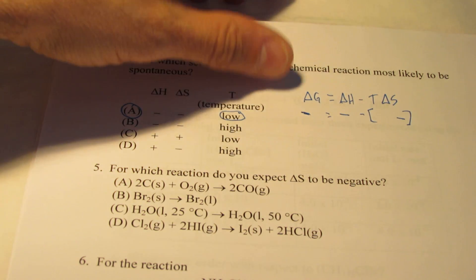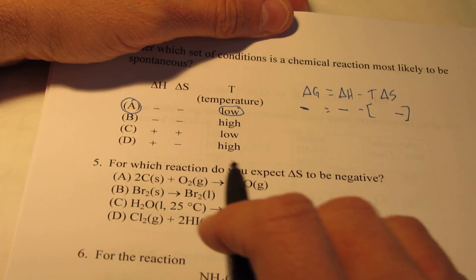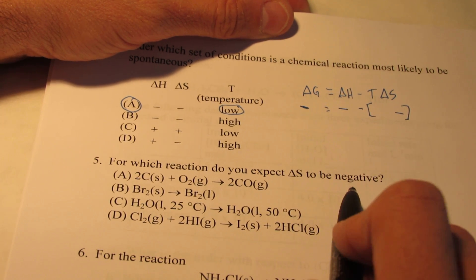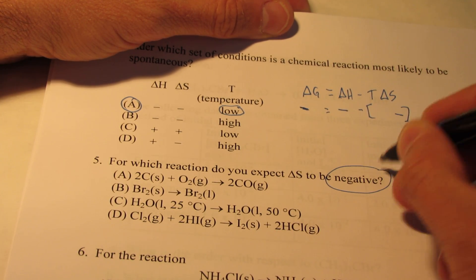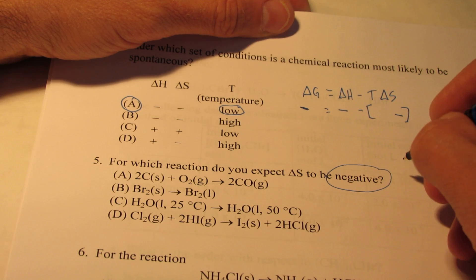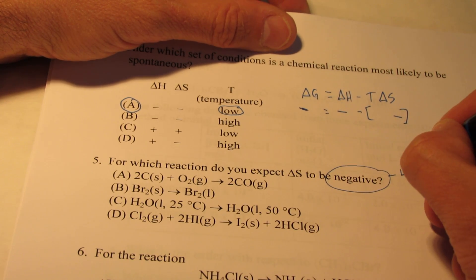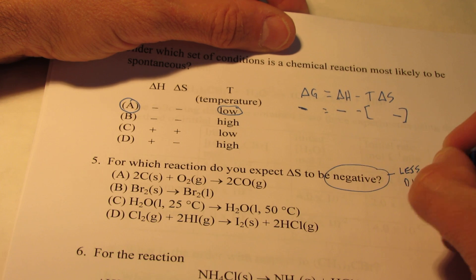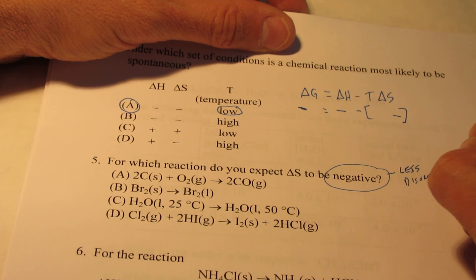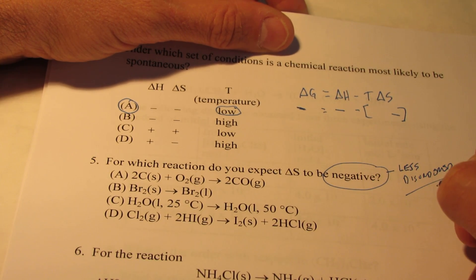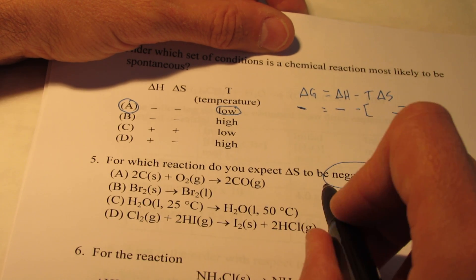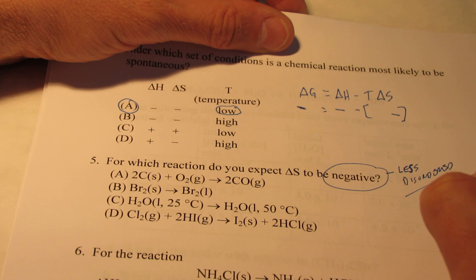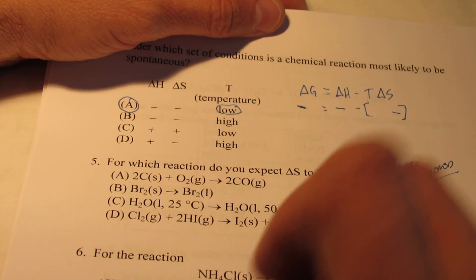There's one correct answer for number five. For which of these do you expect delta S, the change in entropy, to be negative? So think about this. If the change in entropy is negative, that means it's becoming less disordered. That's a strange way of saying more ordered. So if delta S is negative, it's less disordered, or more ordered. So let's take a look at our choices here.